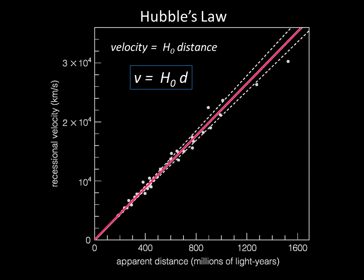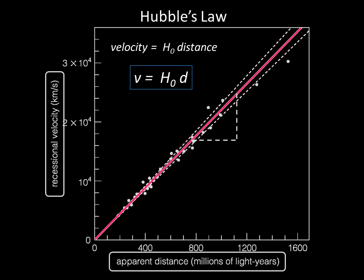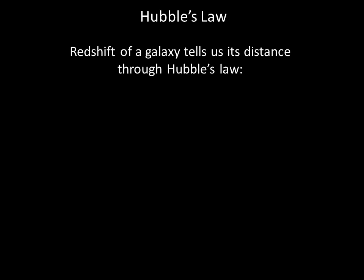You may recall that the slope of the line is rise over run. In this case, the rise is the change in velocity, and the run is the change in distance. This means the slope, H₀, is in units of velocity over distance — here, kilometers per second per million light-years. We can use Hubble's Law to estimate the distance to other galaxies: all we need to do is measure the recessional velocity using the Doppler technique, and the distance is the velocity divided by Hubble's constant.